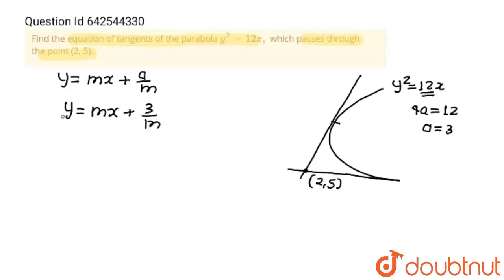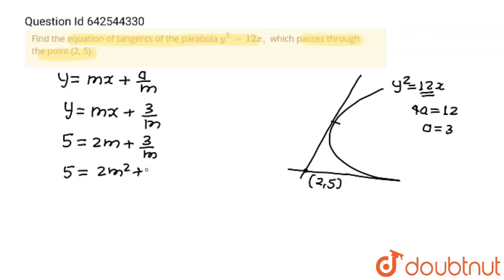As these tangents are passing through (2,5), the point (2,5) will satisfy the equation of the tangent. So this becomes: 5 = 2m + 3/m. Taking LCM, this becomes 5 = (2m² + 3)/m. Cross multiplying: 5m = 2m² + 3.